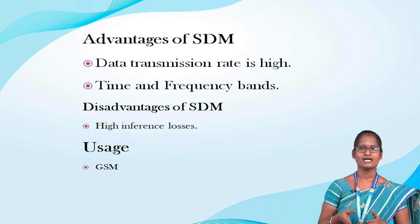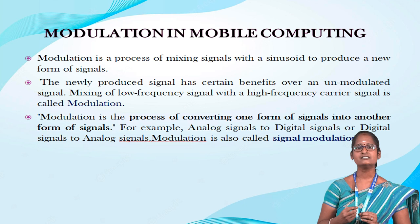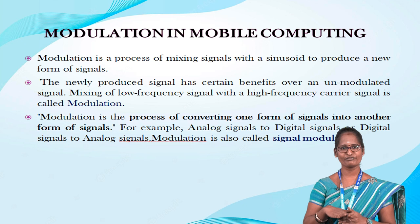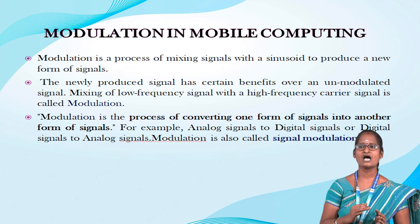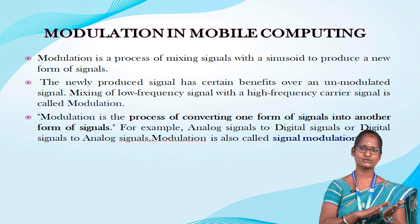Next, modulation in mobile computing. Modulation is a process of mixing signals with a sinusoidal wave to produce a new form of signal. A newly produced signal has certain benefits over an unmodulated signal. Mixing of low frequency signals and high frequency signals where the carrier signal is called modulation. In other words, modulation is the process of converting one form of signal into another form of signal. For example, analog signals to digital signals or digital signals to analog signals.